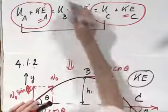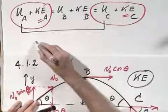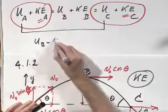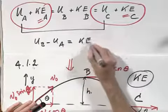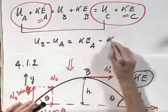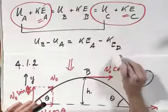If you take the left part of the equation, you can write down that U B minus U A would be the kinetic energy at point A minus kinetic energy at point B.